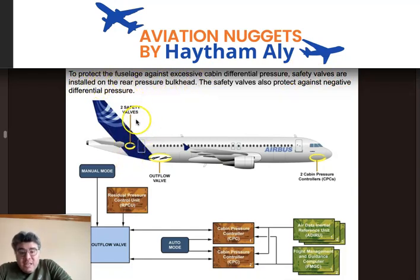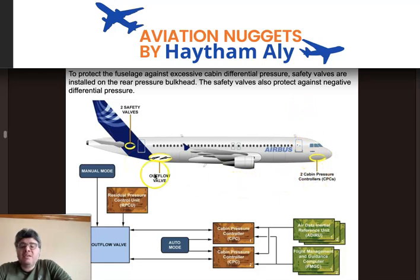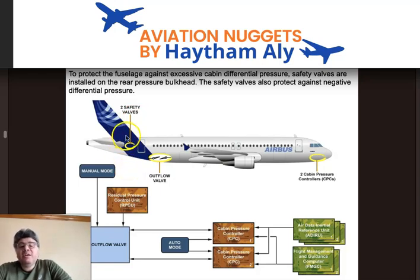The pressurized area of the fuselage extends from the forward bulkhead to the rear bulkhead. In the Airbus A320 family, two safety valves are installed to protect the fuselage against excessive cabin differential pressure.